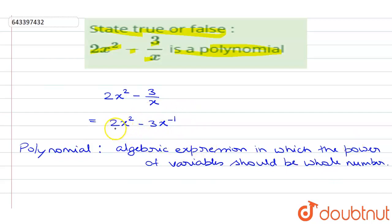Here when we look at this expression, it is given as 2x squared minus 3x power minus 1, and minus 1 is not a whole number. Therefore, this is not a polynomial and the given statement is false.